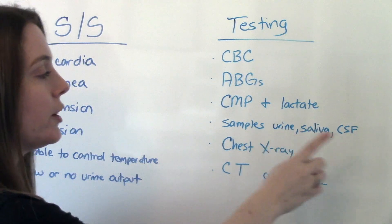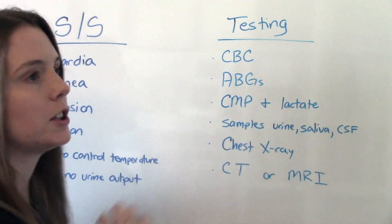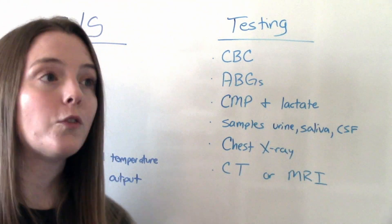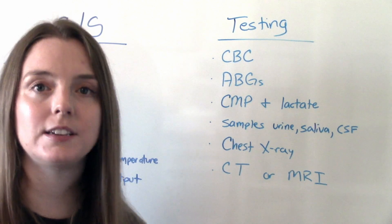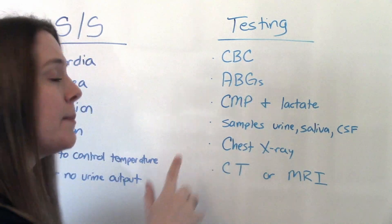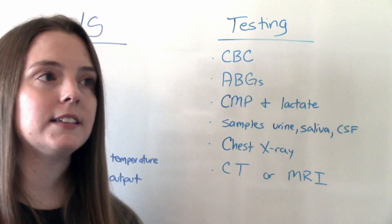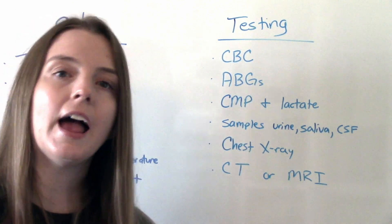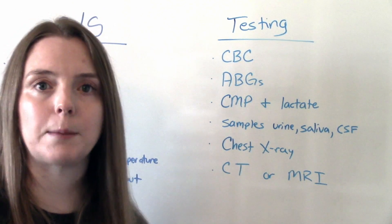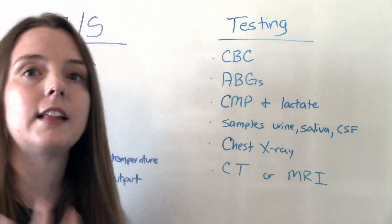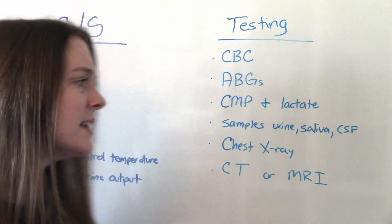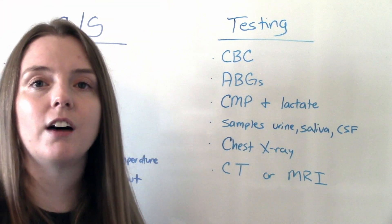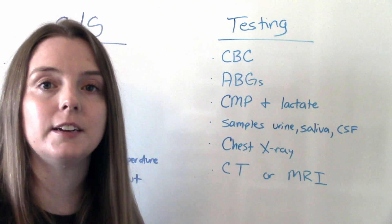We might want to take samples from their urine, saliva, or cerebrospinal fluid to hopefully identify the causative bacteria so we can treat it better. A chest X-ray helps us determine if this is a respiratory infection — maybe they had pneumonia that worsened and led to septic shock. The chest X-ray lets us see what's going on in the thoracic cavity. CT or MRI scans allow us to check organ function and see how they're being affected.